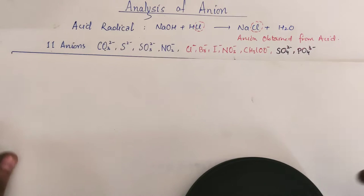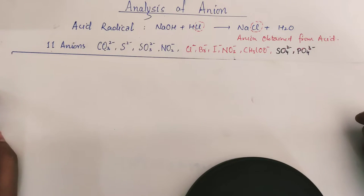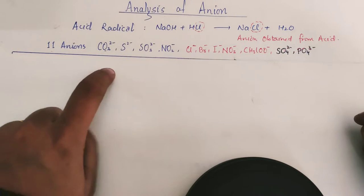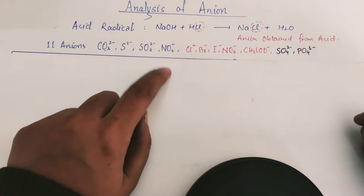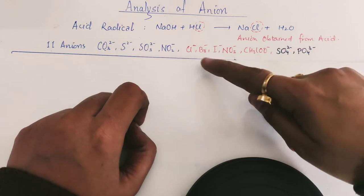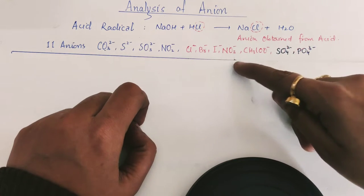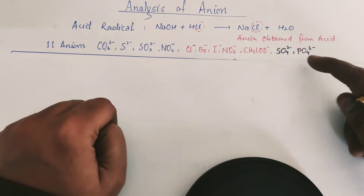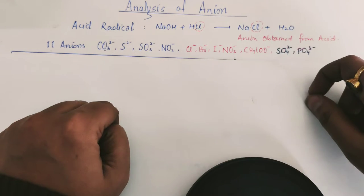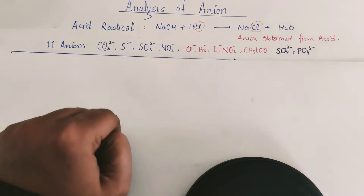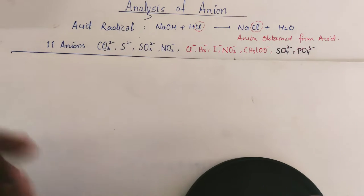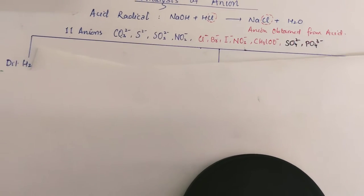In class 11th and 12th, there are a total of 11 anions: carbonate, sulfide, sulfite, nitrite, chloride, bromide, iodide, nitrate, acetate, sulfate, and phosphate. These are categorized into three groups on the basis of their reaction with dilute H₂SO₄ or concentrated H₂SO₄.